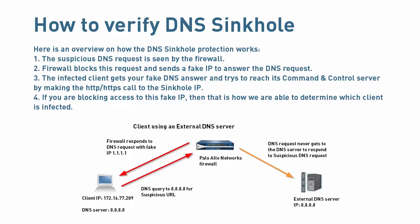Now, let's cover this with a little bit more detail. When the client system is accessing a known malicious URL using an external DNS server, the DNS query will go from the client through the Palo Alto Networks firewall and to the external DNS server. The firewall will hijack the DNS query and respond to the DNS server with the DNS sinkhole IP address that you have configured. In this example, we're using 1.1.1.1 as the fake DNS sinkhole IP.